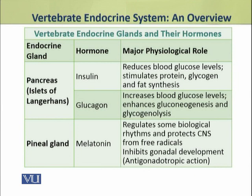Dear students, the pancreas is a dual gland. It has an exocrine part that produces the digestive pancreatic juice, but it also has islets of Langerhans, which are endocrine in their function. They produce two hormones: insulin and glucagon. The next gland is the pineal gland. The pineal gland produces a hormone called melatonin, which is very important in circadian rhythms.